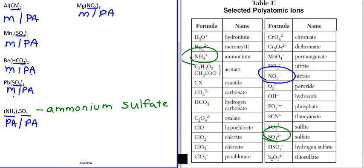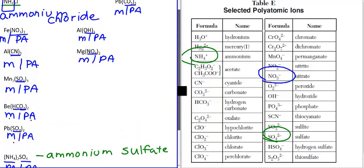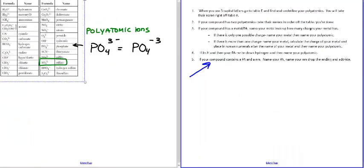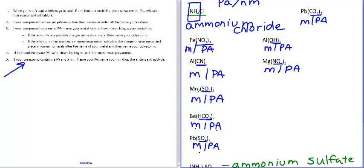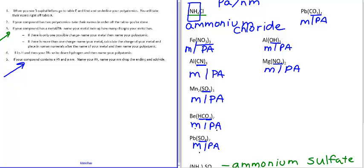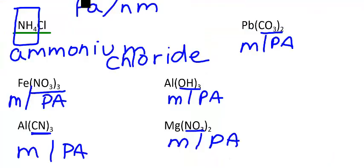We've addressed how to name a polyatomic with a non-metal, and how to name a polyatomic with a polyatomic. But we haven't addressed how to name all the compounds that are metals with polyatomics. When your compound contains a metal and a polyatomic — rule number three — name your metal, look up how many charges the metal has. If there's only one possible charge, name your metal, name your polyatomic, and you're done. If there's more than one possible charge, use the Roman numeral in parentheses, just like with binary compounds. You will not use prefixes for these — prefixes are only for non-metal to non-metal.